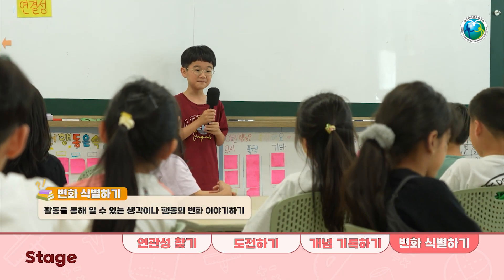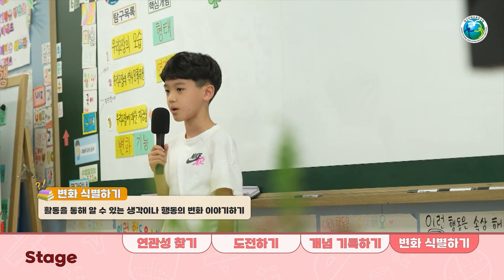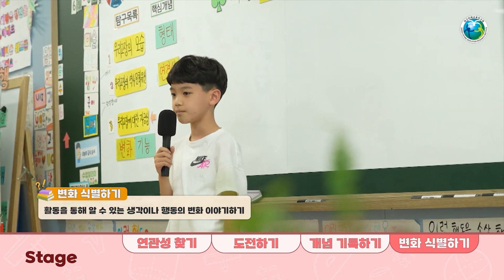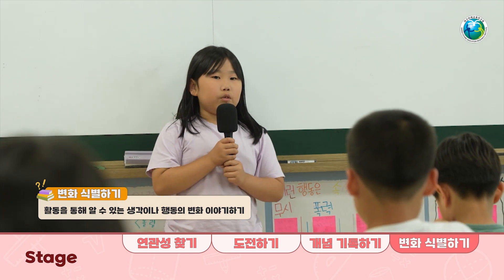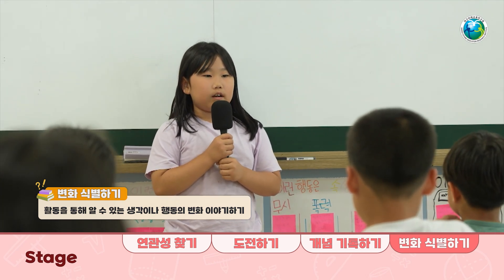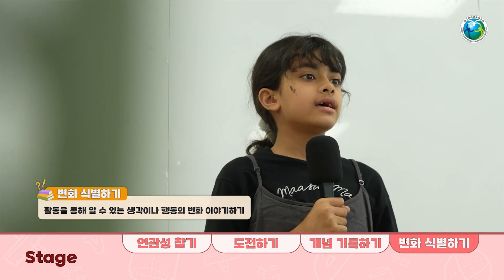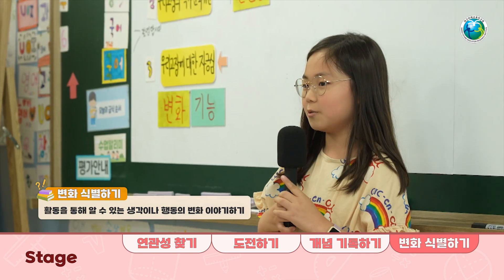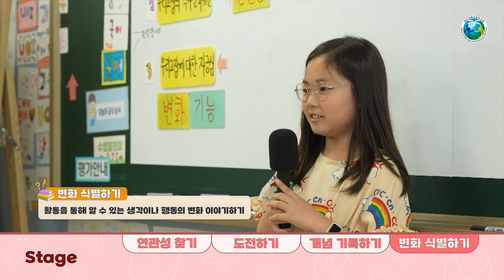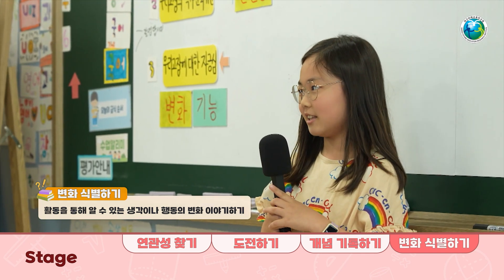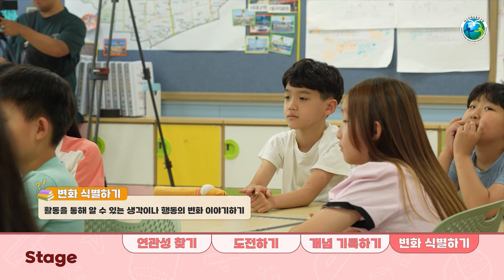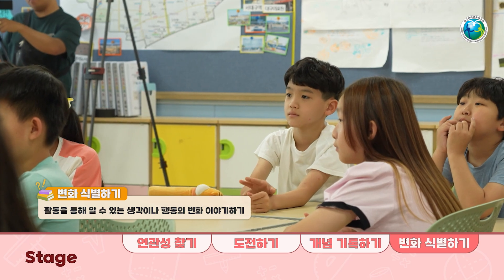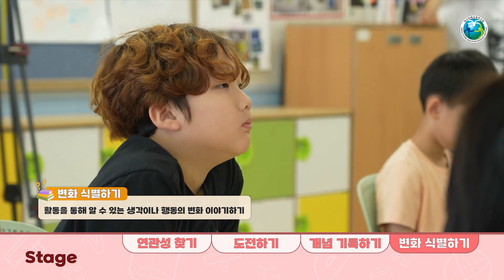변화 식별하기 단계는 다양한 관점을 종합하여 학생들의 변화된 생각과 행동을 바탕으로 앞으로의 다짐을 이야기합니다. 예를 들면, '저는 전에는 배짱이가 게으르다고 생각했는데 친구들과 이야기해 보니 배짱이의 삶도 장점이 있다고 생각하게 되었습니다.'와 같이 이야기할 수 있습니다.